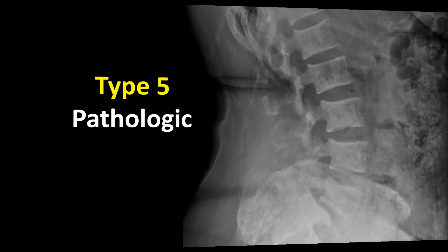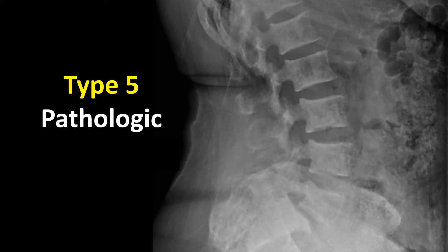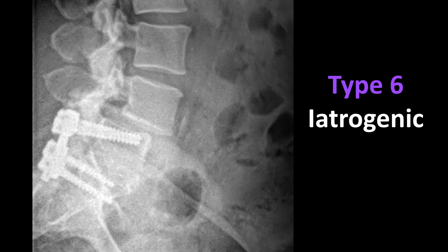A type 5 spondylolisthesis is due to underlying pathologic bone — meaning there is something severely wrong with the bone, whether it's a generalized or systemic metabolic condition. Metastatic carcinoma, diffuse osteopetrosis, and Paget's disease are just a few examples of conditions that can weaken the bone, and once weakened, an anterolisthesis can easily occur. This is referred to as a type 5 or pathologic spondylolisthesis.